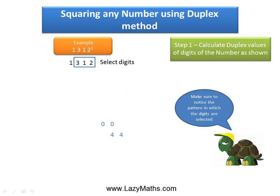Then we select the last 3 digits, 3, 1 and 2 and we get the duplex value for them as 13 coming from 2 times 3 times 2 plus 1 squared. And we write down 13 as shown below.